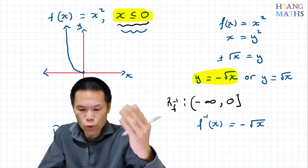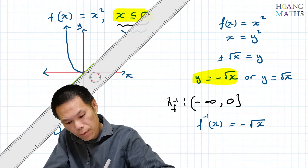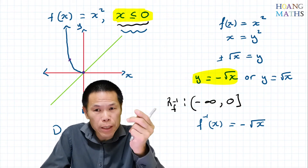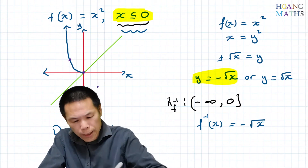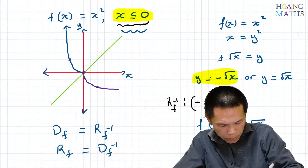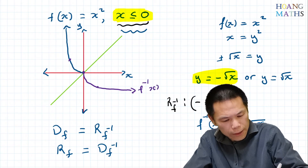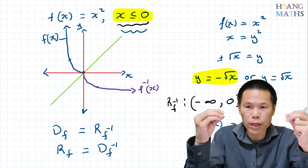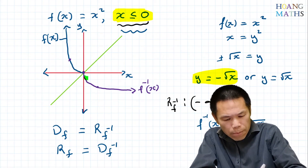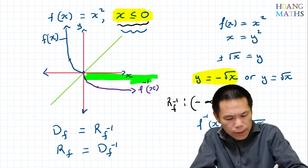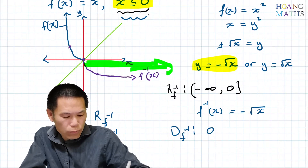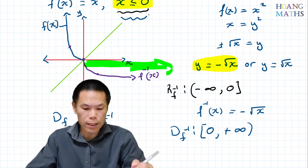So the inverse function is f inverse of x equals negative square root of x. To sketch this, I draw y equals x first, then reflect the original function about that line. This point negative one, one reflects to one, negative one. The graph goes like this — this is f inverse of x and this is f of x. The domain of the inverse function is from zero to positive infinity, including zero: [0, ∞).